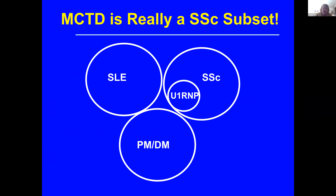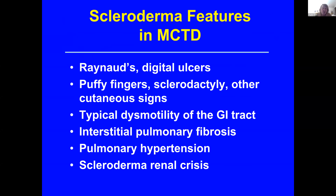I really think that this mixed connective tissue disease associated with U1RNP is really a subset of scleroderma. The scleroderma features in MCTD, as we've talked about, are Raynaud's, digital ulcers, puffy fingers, skin thickening, telangiectasias, calcinosis, typical dysmotility of the GI tract, interstitial lung disease, pulmonary hypertension. Rarely scleroderma renal crisis occurs, but fortunately that's rare. These are all features that we see in scleroderma.